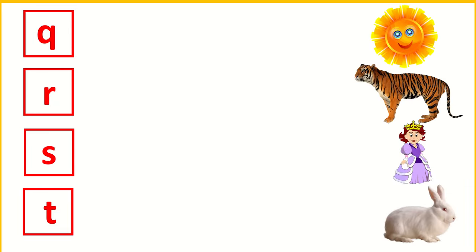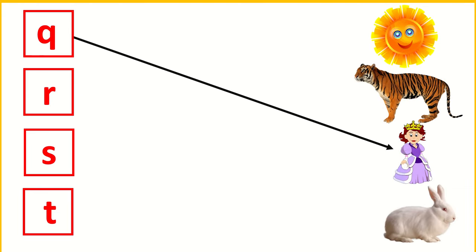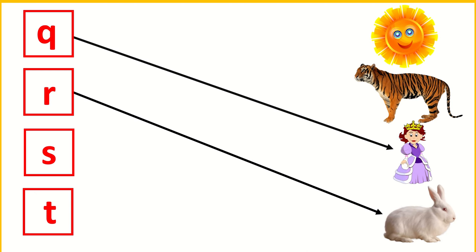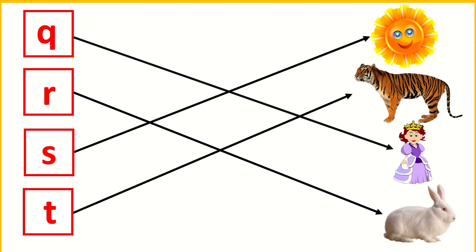Q for Queen. R for Rabbit, S for Sun. T for Tiger.